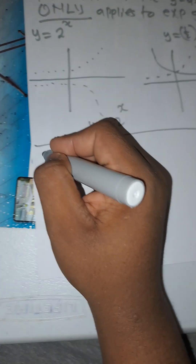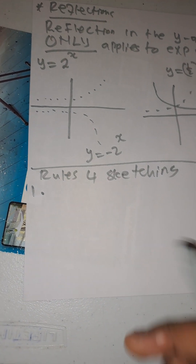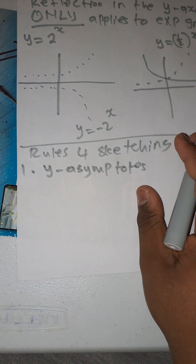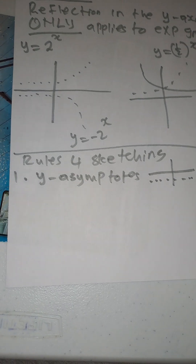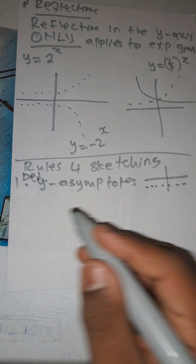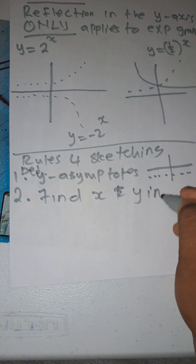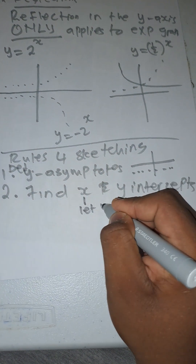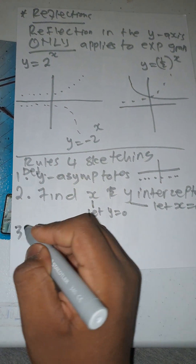Now let's look at the rules for sketching exponential graphs. The first thing you must do is write down the y-asymptote and draw it using a dotted line. The y-asymptote is the horizontal line that cuts the y-axis horizontally. Second, find the x and y intercepts: for x-intercept let y equal zero, for y-intercept let x equal zero.